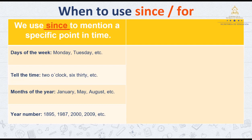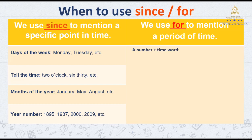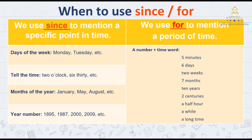On the right, we find the explanation that we use 'for' to mention a period of time. A period of time means we are not specific about telling when that action happened. A way to understand it better is when we express a number plus a time word, for example: five minutes, six days, two weeks, seven months, ten years, two centuries, a half hour, a while, a long time.